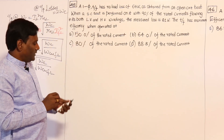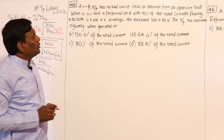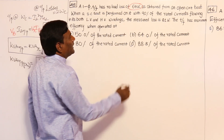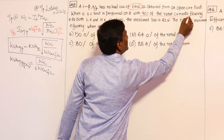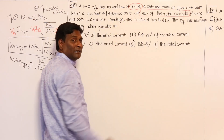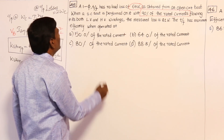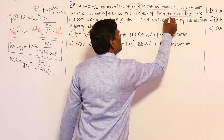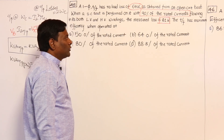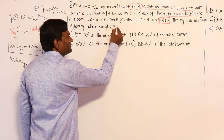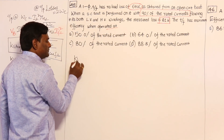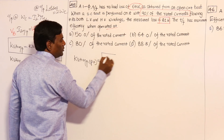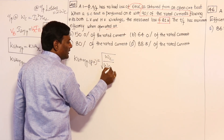Let us solve some problems. In this problem, a single-phase transformer has a no-load loss (core loss) of 64 W as obtained from the open circuit test. When the SC test is performed at 90% of rated current flowing in both LV and HV windings, the measured loss is 81 W — so copper loss is 81 W at 90% rated current. Find the KVA at which maximum efficiency occurs, in per unit.